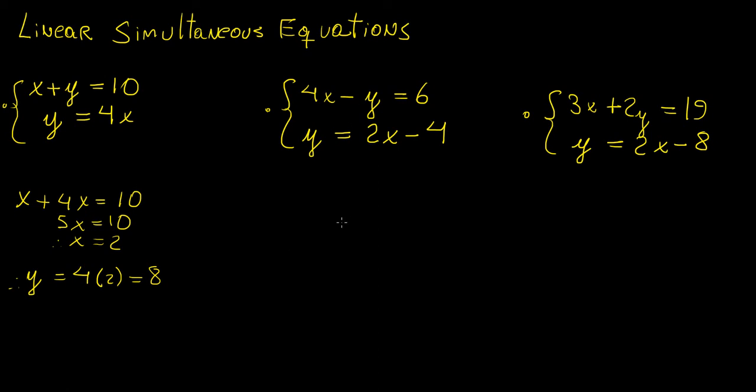Now let's look at this second example here. So we have 4x minus y equals 6, and then y is going to be equal to 2x minus 4. So how about we do the same thing? We're just going to grab this whole expression here, and we're going to substitute it into this. So we're going to grab the first equation.